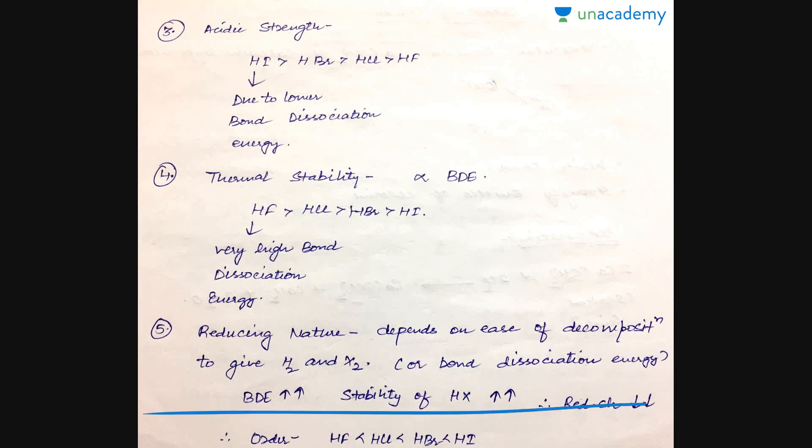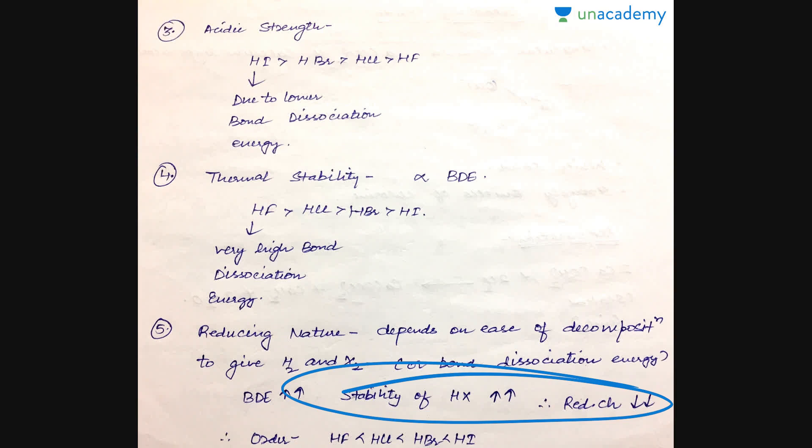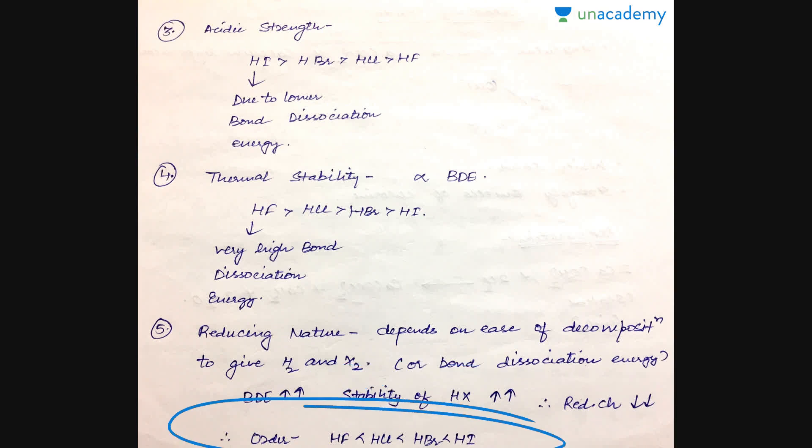The reducing nature depends on the ease of decomposition: higher bond dissociation energy means greater stability of HX and lower reducing character. Reducing character involves the addition of an electropositive species — when HX loses its proton, that proton adds to and reduces another species. Therefore the order of reducing nature is: HI is the strongest reducing agent and HF is the weakest.